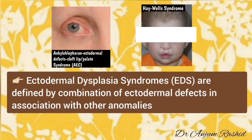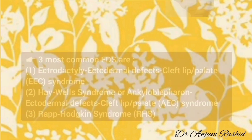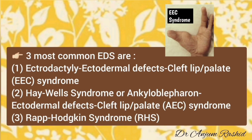Ectodermal dysplasia syndromes are defined by a combination of ectodermal defects plus other anomalies. The three most common ectodermal dysplasia syndromes are: first, ectodactyly ectodermal defects and cleft lip or palate syndrome; second, Hay-Well syndrome or ankyloblepharon ectodermal defect and cleft lip and palate syndrome; and third, Rapp-Hodgkin syndrome.